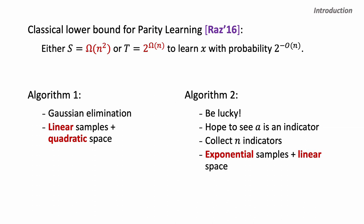In 2016, Raz proved that to learn the secret x, a learning algorithm requires either quadratic memory or an exponentially large number of samples. In other words, both algorithms we mentioned before are tied to these two extreme cases — either quadratic memory or exponential samples — which completely helps us understand parity learning in the classical setting.